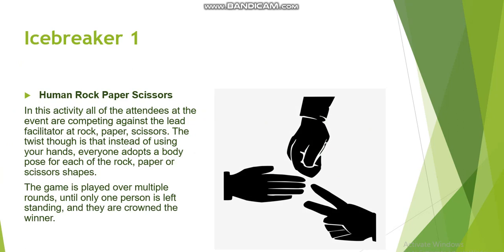We have two different ice breakers we are going to do inside the class: human rock, paper, scissors and hobbies and interests. For the first activity, all attendees compete against the lead facilitator at rock, paper, scissors. We play it more than one time until only one person is left standing and they are crowned the winner.